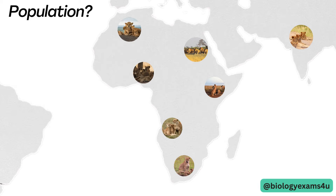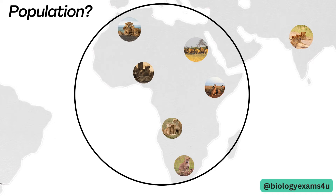Now let us take only this area, this locality. Suppose this is the Serengeti National Park in Tanzania. It is estimated that there are close to 3,000 lions in the Serengeti-Mara ecosystem. As we know, lions live in prides of 15 to 20 members, so there are many prides of lion in this particular national park.